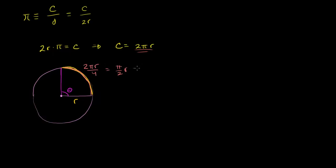You could say this is the same thing as pi over 2 radiuses — not a real word, but that's how I like to think about it. Or you could say it subtends an angle of pi over 2 radians.